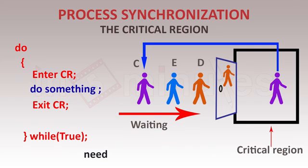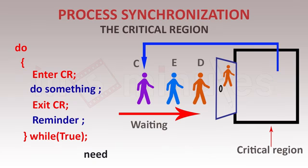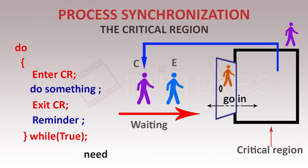The task could be accessing a file, database, or any shared resource. Additionally, when a process exits the critical region, it has a duty to inform the next waiting process. For example, when process C comes out, it informs process D to enter. D then shifts from the waiting queue to inside the critical region. This is essentially how the critical section is supposed to work.